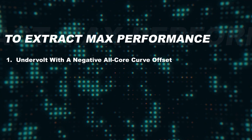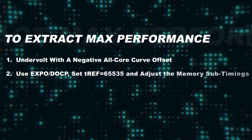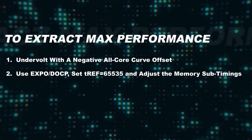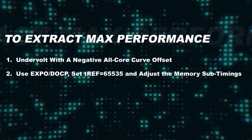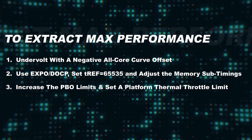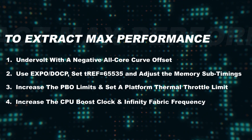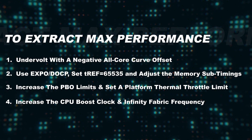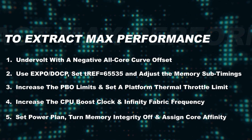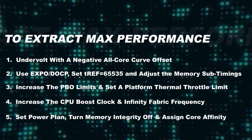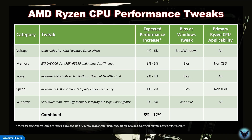In summary, the tweaks I recommend to extract max performance from your AMD Ryzen CPU are: 1) undervolt with a negative all-core curve offset; 2) use EXPO/DOCP, set TREF equal to 65535, and adjust the memory sub-timings; 3) increase the PBO limits and set a platform thermal throttle limit; 4) increase the CPU boost clock and infinity fabric frequency; and 5) set the power plan, turn memory integrity off, and assign core affinity.